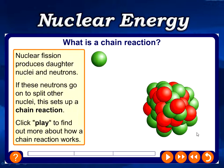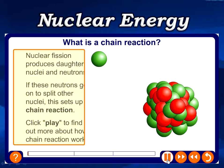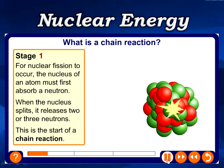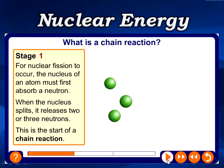Now we look at nuclear energy. This illustration shows nuclear fission and the chain reaction. Stage one: the nucleus of a uranium atom absorbs a neutron. When the nucleus splits, it releases two or three neutrons, depending on the type of element and reaction — this starts what is called a chain reaction.